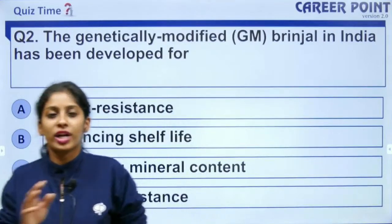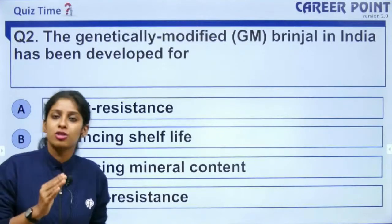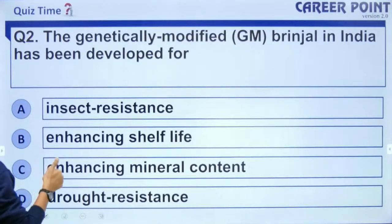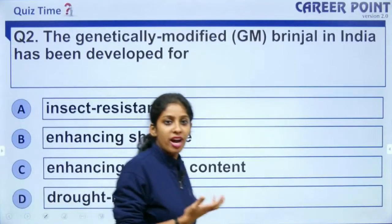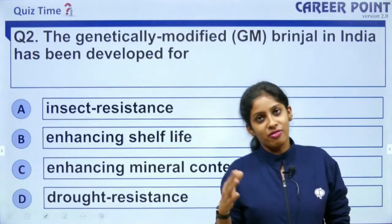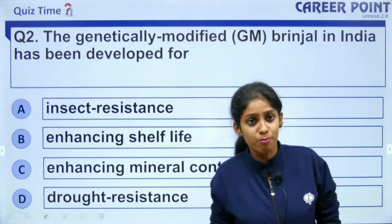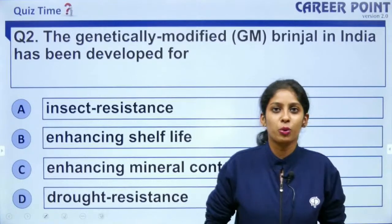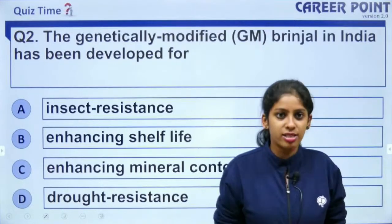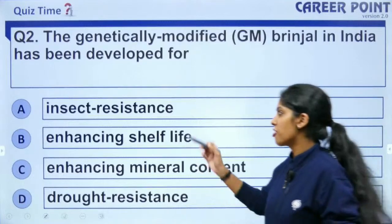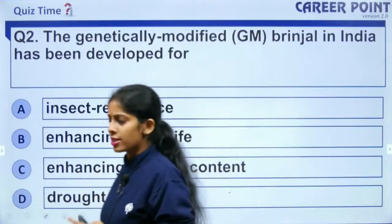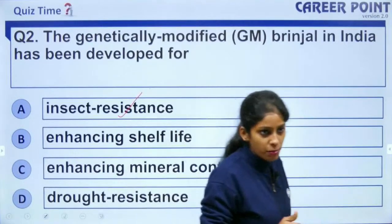I have only 15 questions because it isn't a tough chapter and the weightage of this chapter matters for the exam. Question 2: The genetically modified brinjal in India has been developed for — insect resistance, enhancing shelf life, enhancing mineral content, or drought resistance? The answer is insect resistance. Normal brinjal plants are vulnerable to a lot of insects, so Bt brinjal was developed as an insect-resistant variety. One problem with genetically modified crops is that they can cause allergies and cross-reactions.